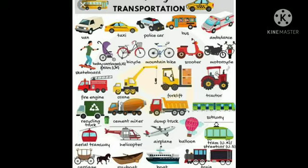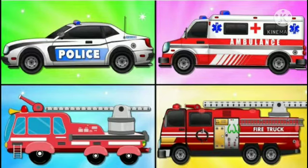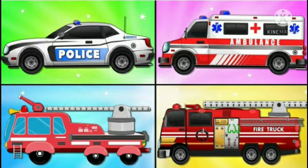Transport vehicles can be for public or private use. For example, trains, buses, aeroplanes, and auto rickshaws. But sometimes people need help urgently — this is called an emergency. Special vehicles are used in such cases, for example, fire brigades, police vans, and ambulances. These are called special vehicles.